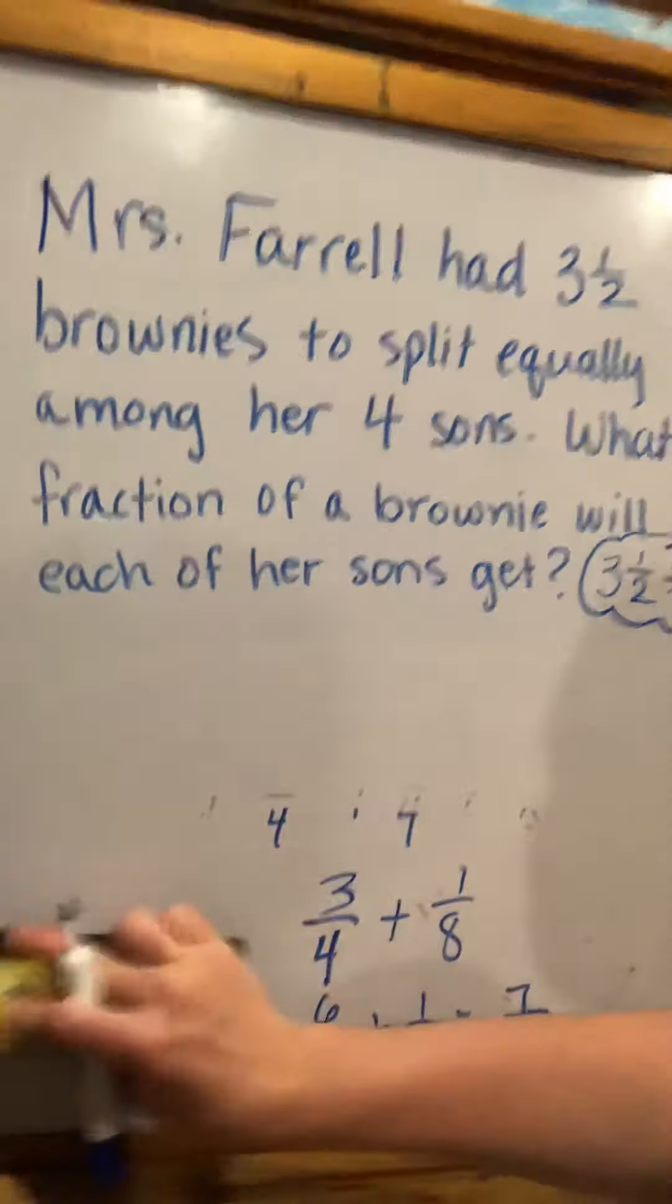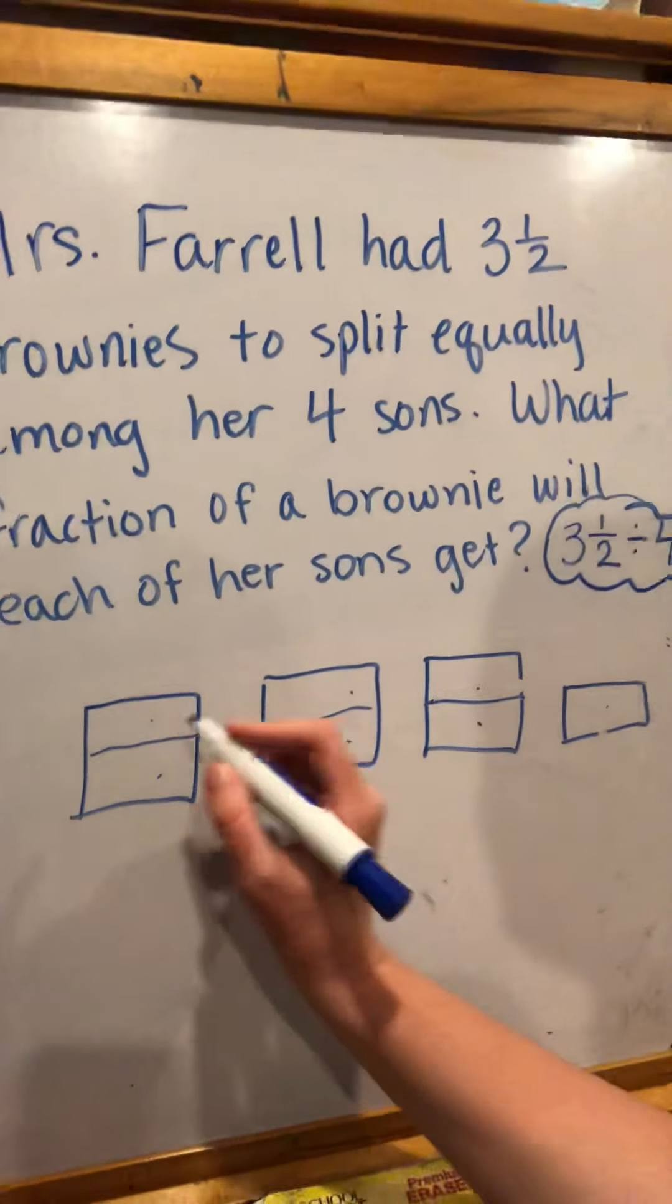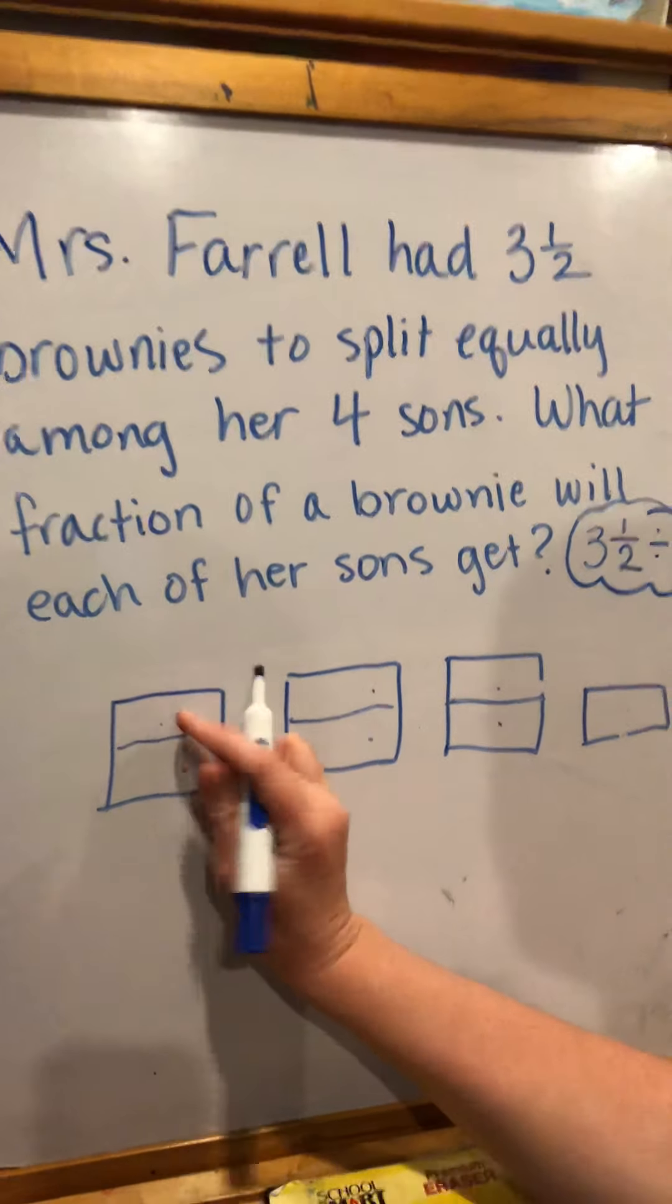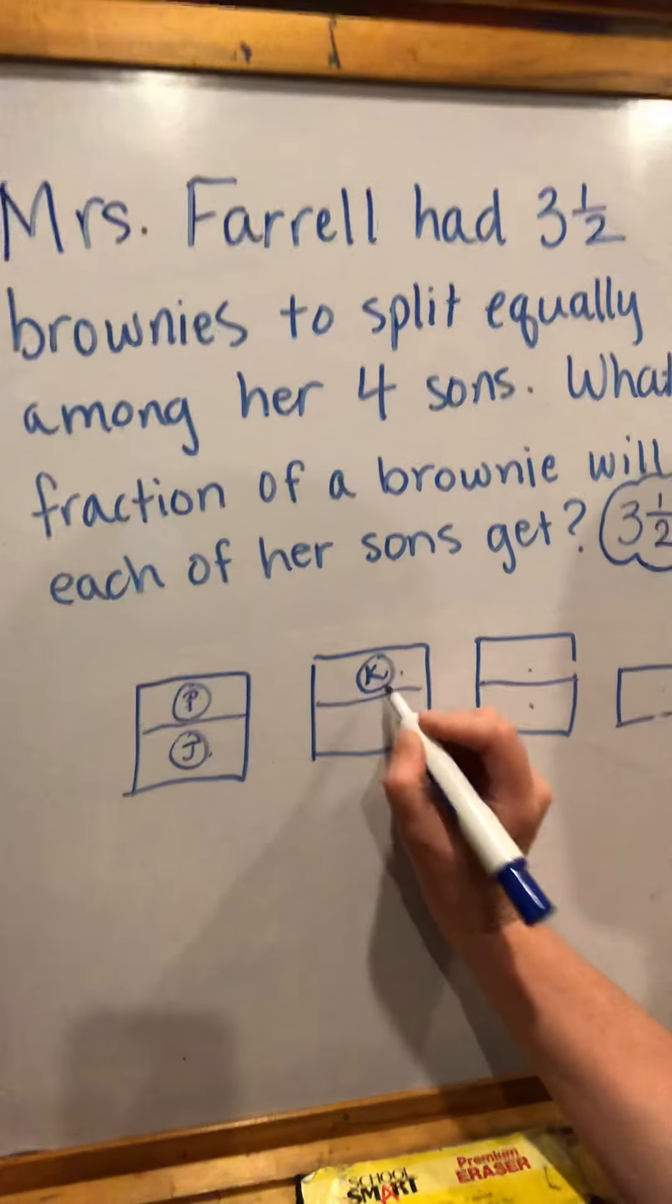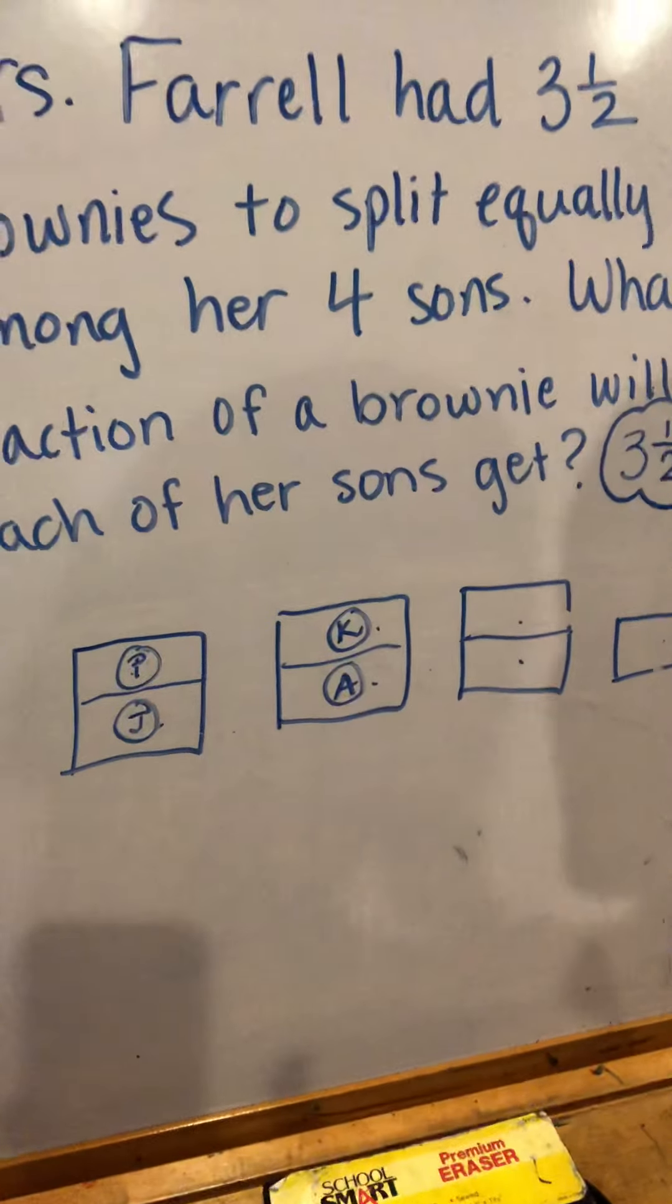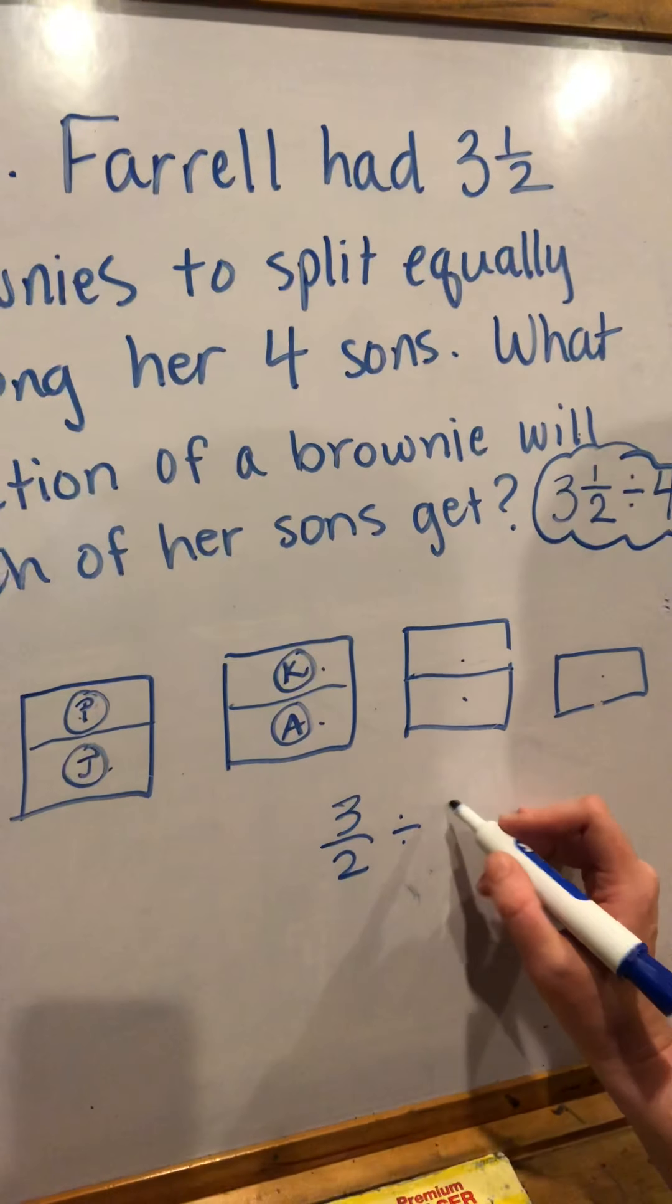I thought, okay, I have three and a half brownies. What if I think about how many half brownies do I have? If I went ahead and divided all my brownies up into half, how many halves is that? One, two, three, four, five, six, seven halves. I know this half brownie could go to my first son Patrick, this half could go to my second son Jack, this half could go to Kevin, and this half could go to Aiden. So each of them is definitely going to get one half of a brownie. Now I have to take these three halves and divide those equally by four.